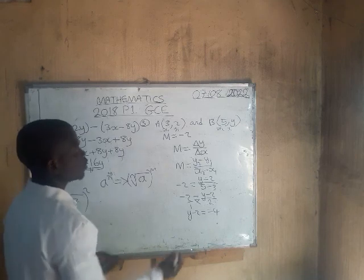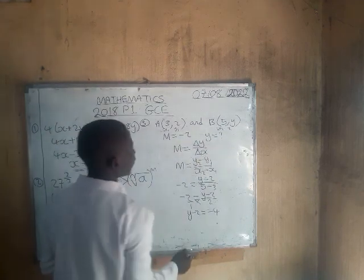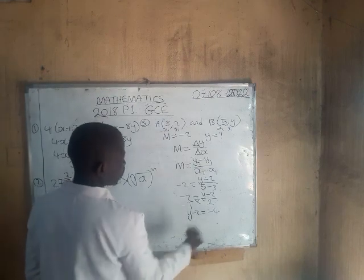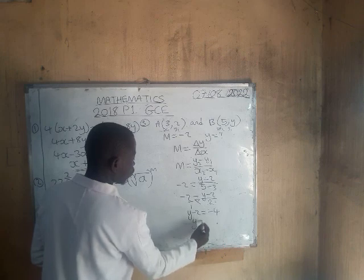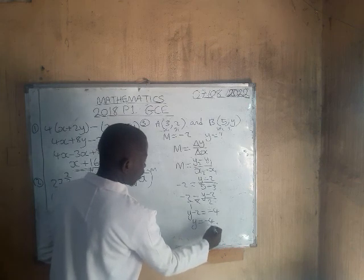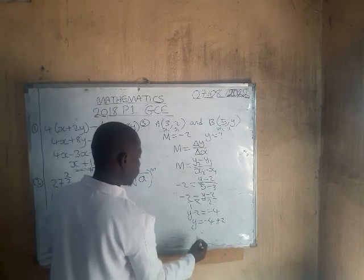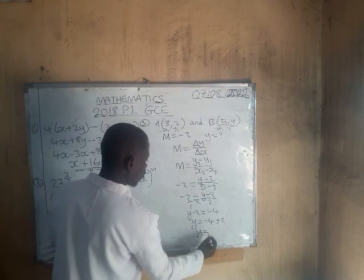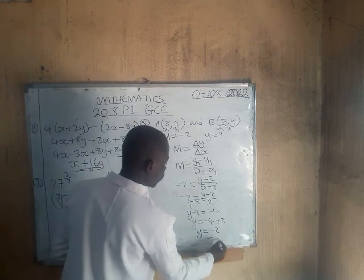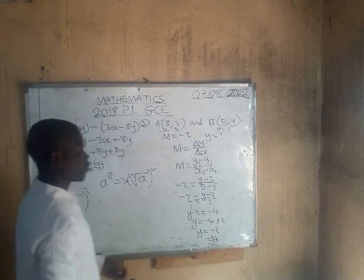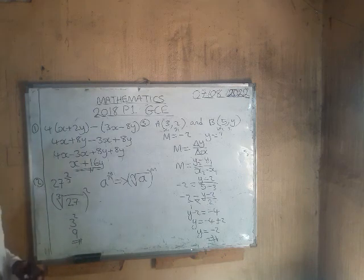To find y, we take negative 2 to the other side: y equals negative 4 plus 2, which gives y equals negative 2. So this is how you find the value of y.